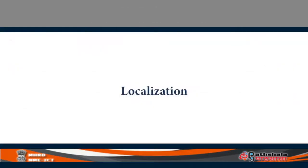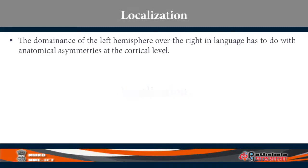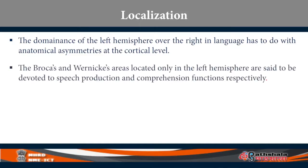What about localization? The dominance of the left hemisphere over the right hemisphere has something to do with anatomical asymmetries. The left hemisphere possesses Broca's area in the third frontal convolution and Wernicke's area in the first superior temporal gyrus. Therefore, production is localized to Broca's area, and comprehension is localized to Wernicke's area. This is localization.